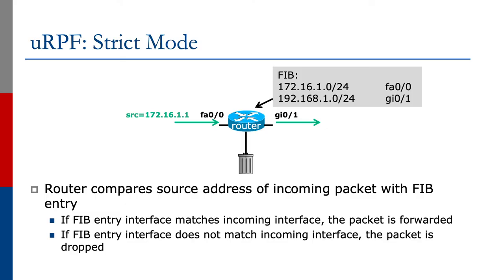Let's have a look at how this all works. The slide shows URPF strict mode. We have a router, an incoming interface FastEthernet0/0, and an outgoing interface Gigabit0/1. A packet comes in on the incoming interface FastEthernet0/0 with a source address 172.16.1.1. The router will look in the FIB to see how it reaches this source address, and it sees that the source address is reachable through FastEthernet0/0.